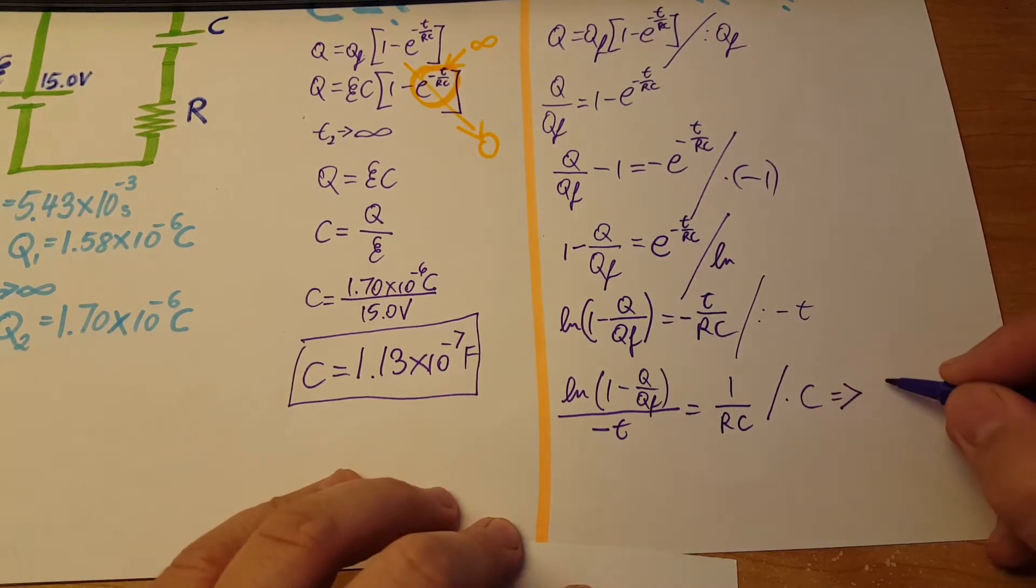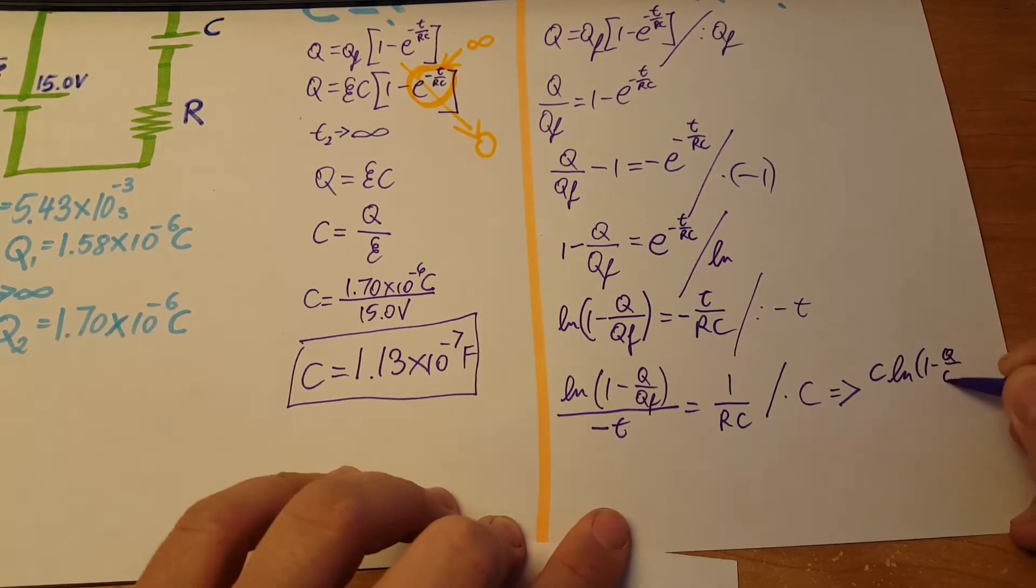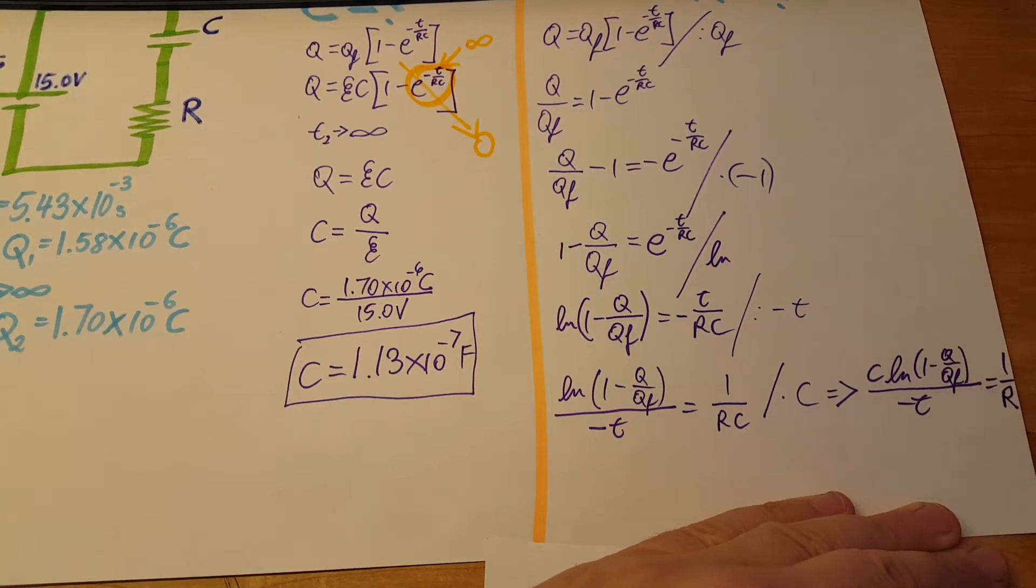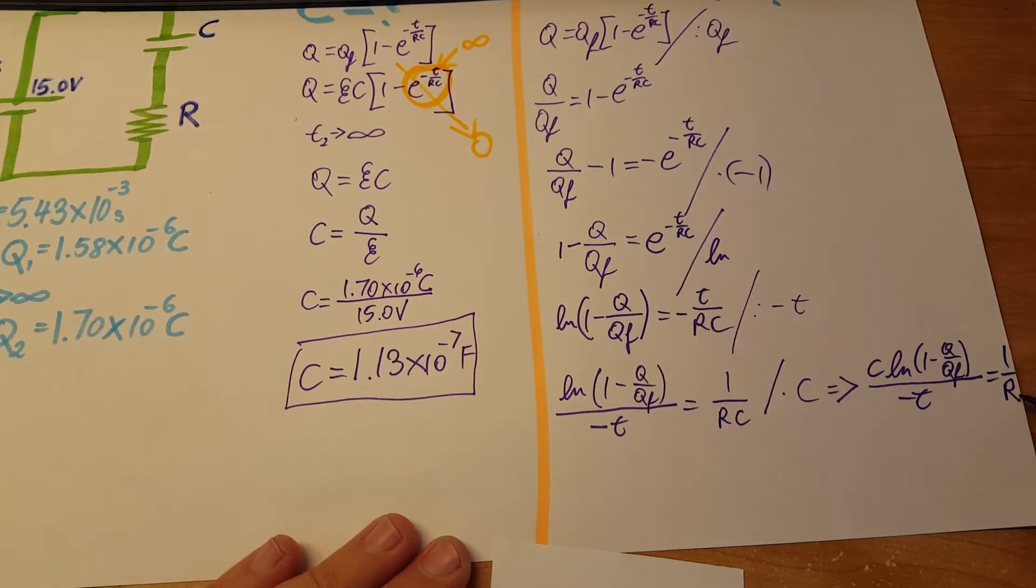Let me write it over here: C times LN of one minus Q over Q final over negative t will equal one over R.